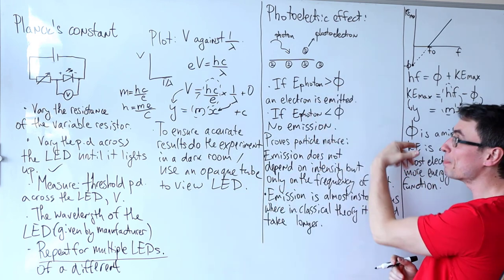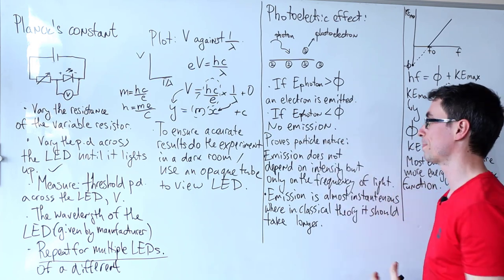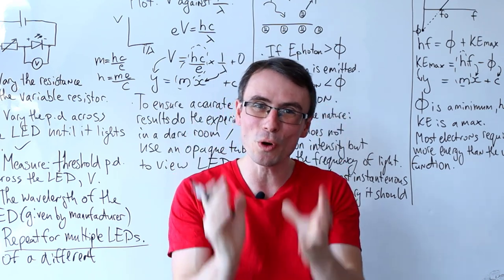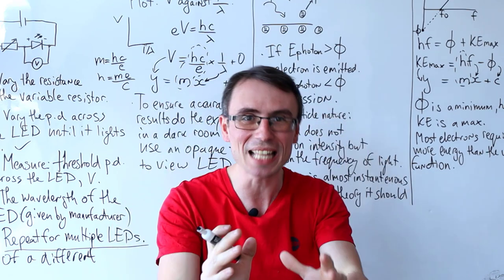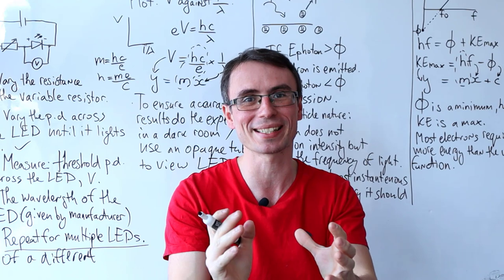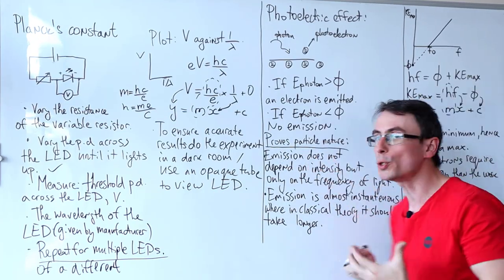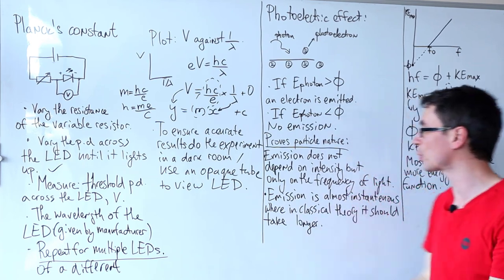Remember, the work function is the minimum energy of a photon required to release an electron from the surface of a metal. If the energy is below the work function, there is no emission. And here is something that many people do not fully understand, and let me just explain this as best as I can.